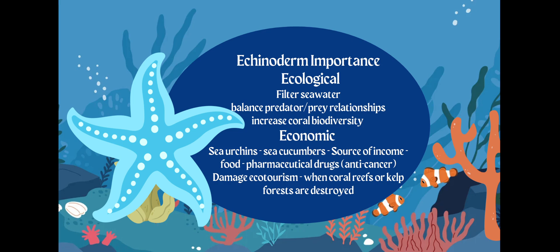The only thing is sea urchins, when they are left unchecked, they can devour kelp forests and destroy them. So if we don't keep the population of sea stars and sea urchins — our echinoderms — under control, they can get a little out of hand and start to over-consume around coral reefs and kelp forests.